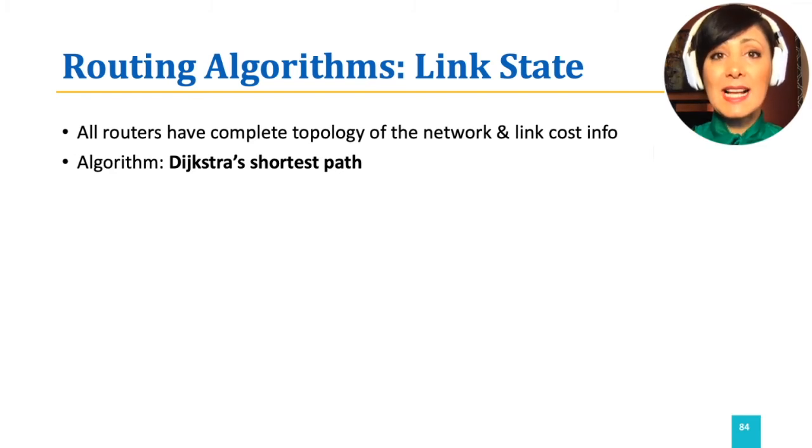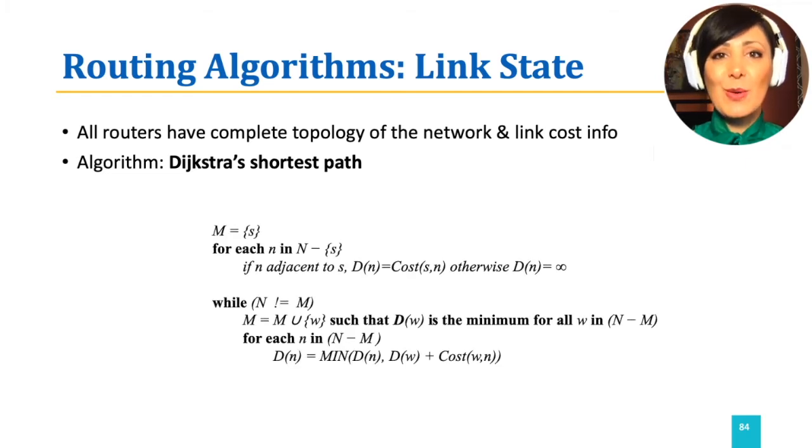In link state class of algorithms, all of the nodes in the network have complete topology of the network and link cost information for each of the links in the network. Let's check how it is possible going through Dijkstra's algorithm shown in the pseudocode in this figure.